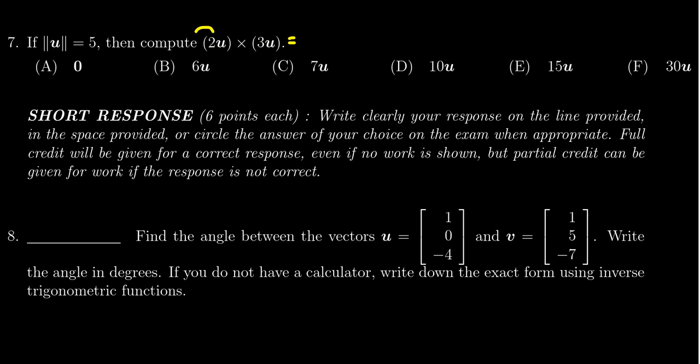So if you factor out the first scalar, you're going to get 2 times u cross 3u, and then if we factor out the 3, you're going to end up with 2 times 3 times u cross u.